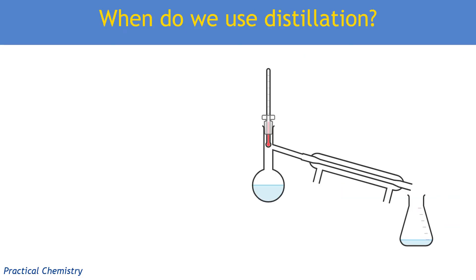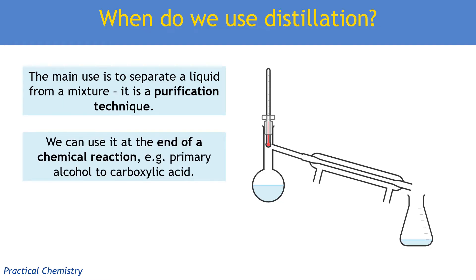So when do we use distillation? The main use, as we've already said, is separating a liquid from a mixture. So it's a purification technique. We would use it at the end of a chemical reaction. So let's say that we've heated a primary alcohol with an oxidizing agent and produced a carboxylic acid. Now, you've got lots of things in that reaction mixture. You've got carboxylic acid, but you've also got water. You've also got acid. You've got oxidizing agent. You may even have some leftover alcohol. So we can use distillation to separate out the product that we want.